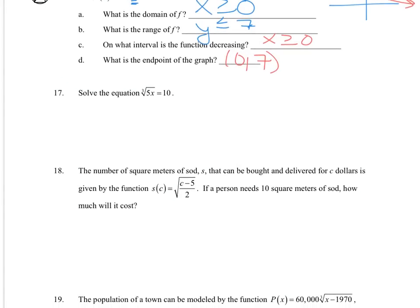Solve. So to eliminate the radical, I'm going to do a power of 3 to both sides. And then divide by 5, so x is 200.